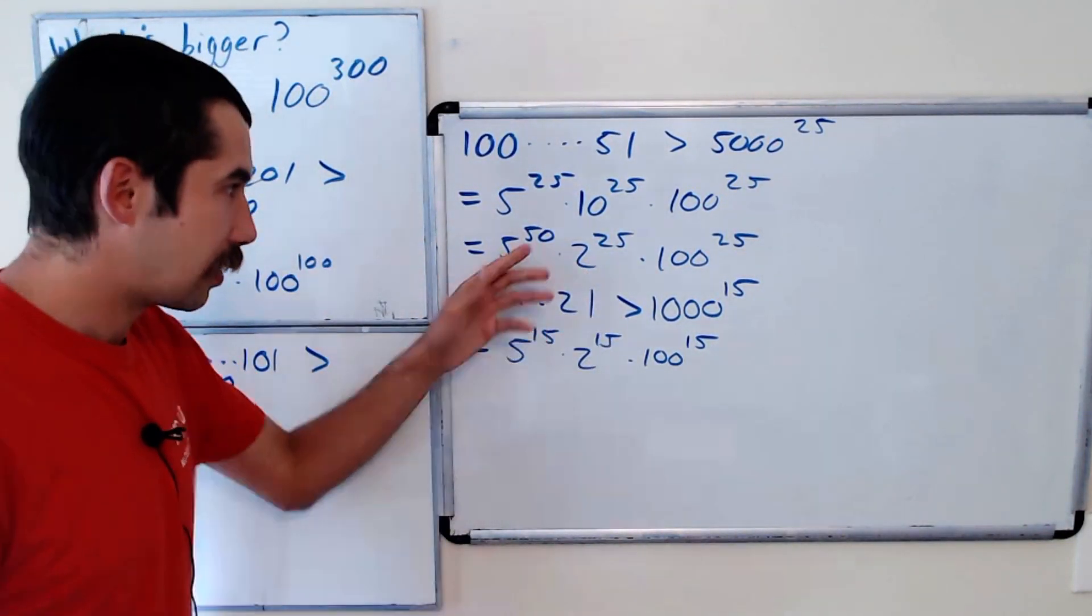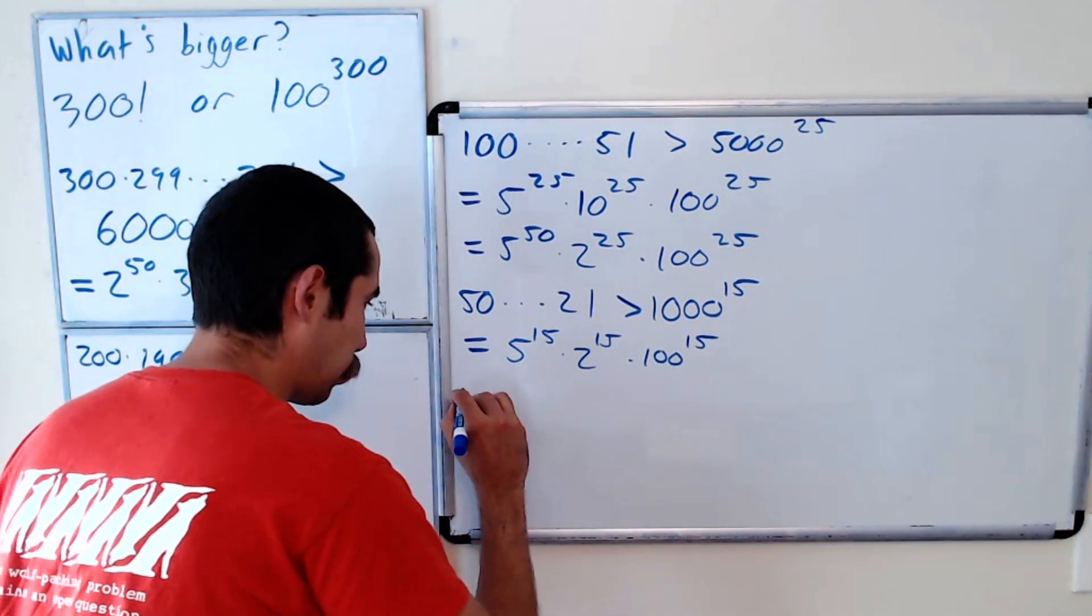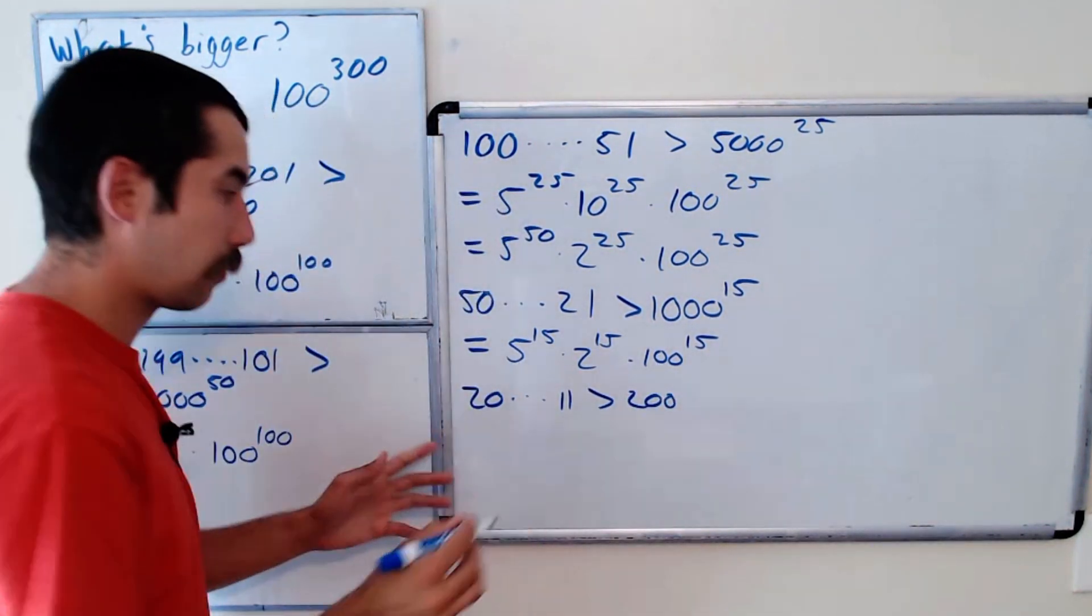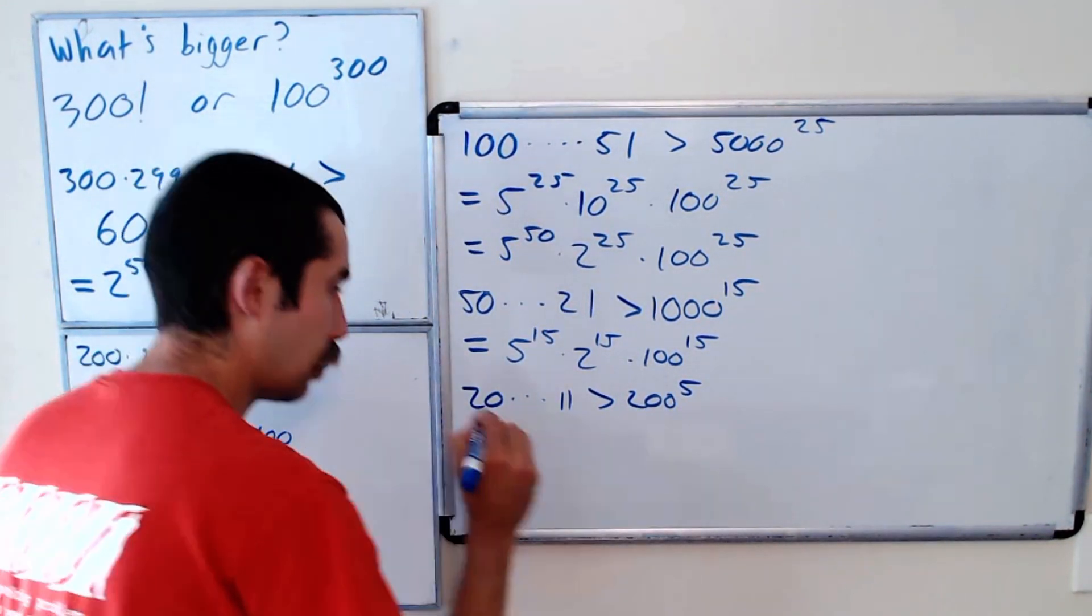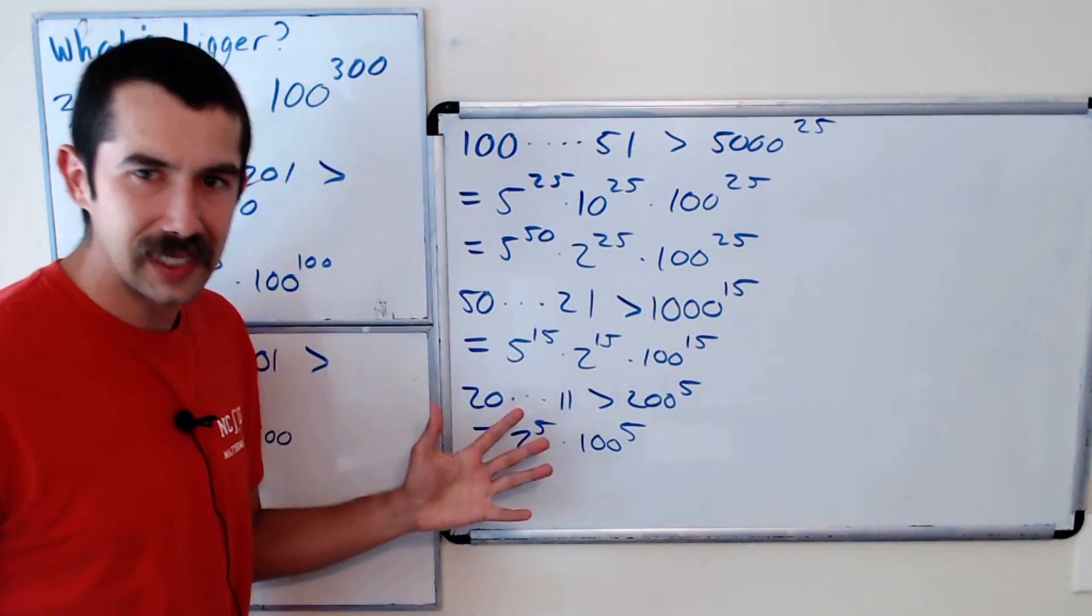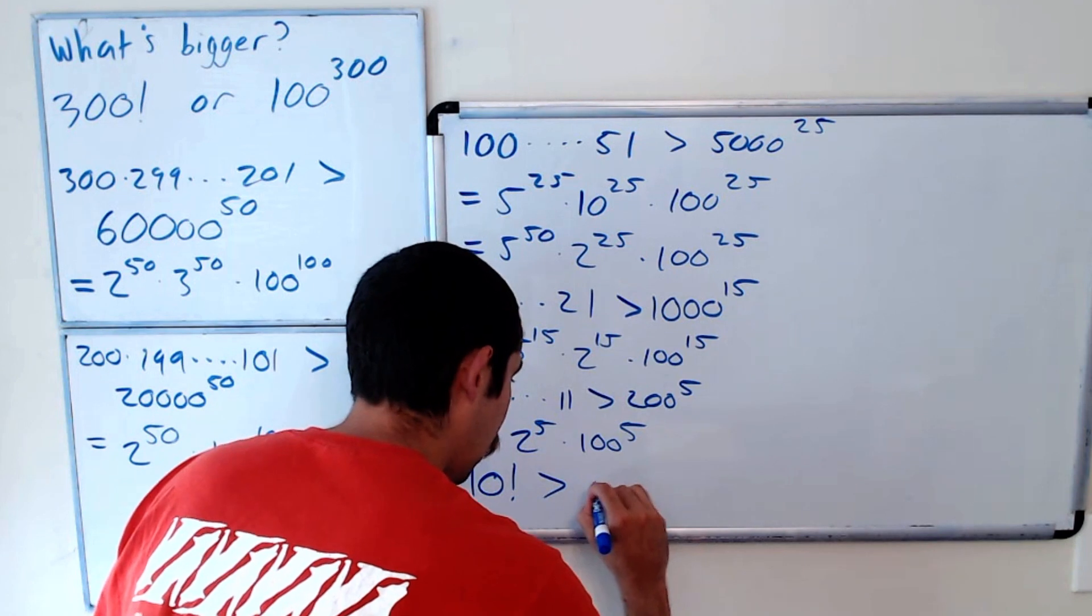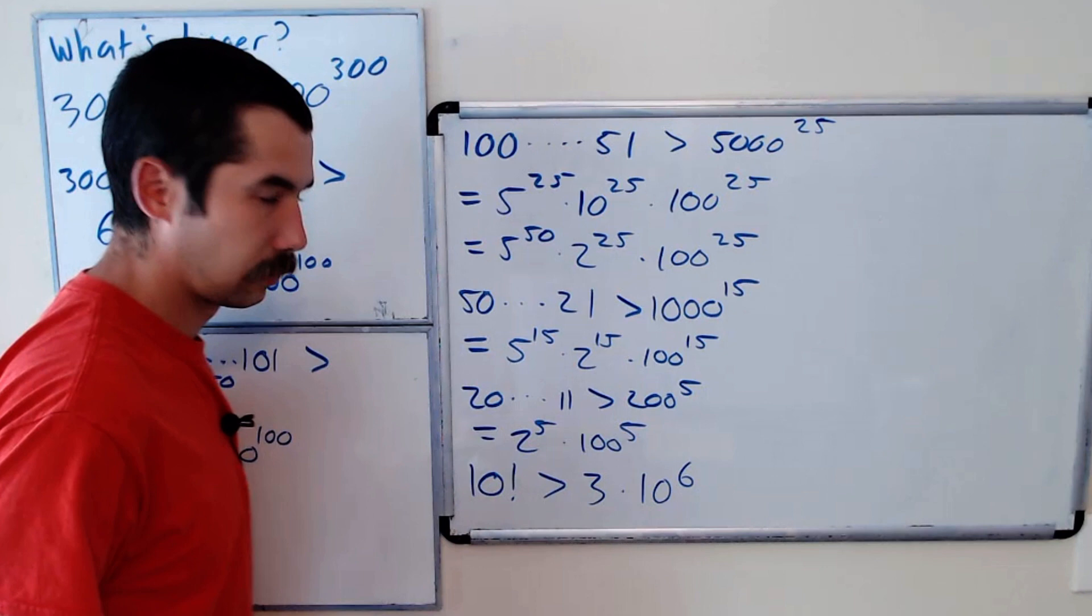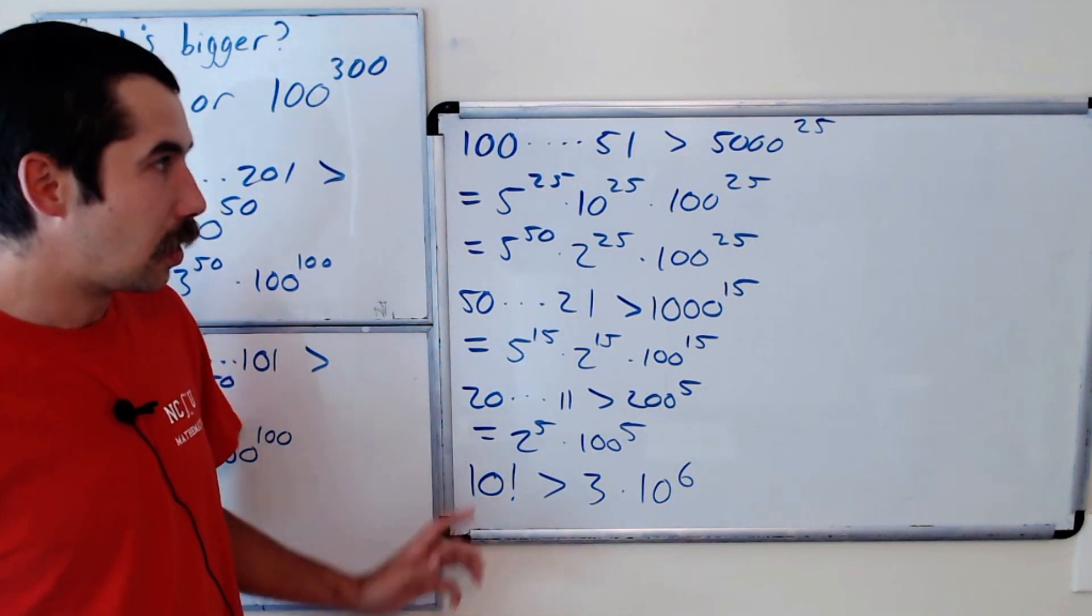Okay, now let's go from 20 to 11. And then we're going to have to do a little bit of calculation. So 20 all the way down to 11 is greater than 200 to the fifth, which is equal to 2 to the fifth times 100 to the fifth. And then the last thing and you could just type this into a calculator 10 factorial is greater than 3 times 10 to the sixth. Okay, so this is small enough, you could just type it into a calculator.